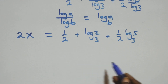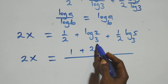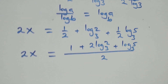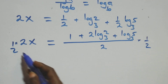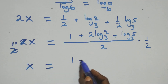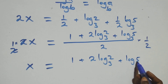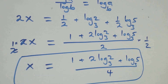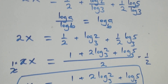Bringing everything together as one fraction, 2x equals to 1 plus 2 log 2 base 3 plus log 5 base 3, all over 2. Multiplying both sides by 1 over 2, the 2 cancels and we get x equals to 1 plus 2 log 2 base 3 plus log 5 base 3, all over 4. That is the value of x.